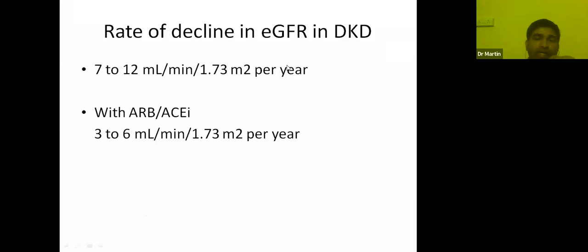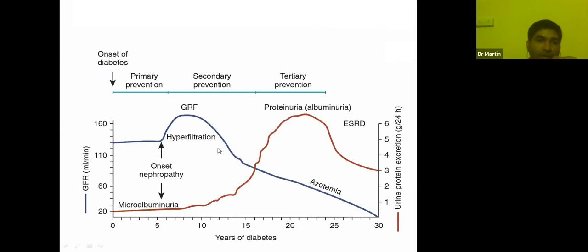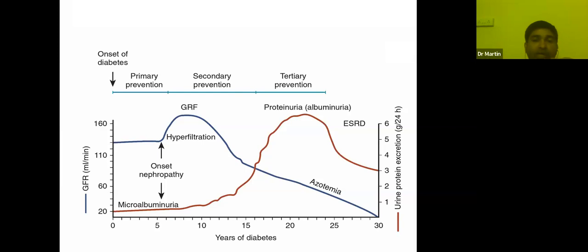The rate of GFR decline in diabetic kidney disease is about 7 to 12 ml per minute per year — a significant decline. Treatment with ACE inhibitors and ARBs can control the rate of decline, but ultimately the patient's creatinine will slowly rise toward azotemia and end-stage kidney disease. Once you diagnose a patient with diabetic kidney disease, you are accepting that this patient will end up in this pathway and all you can do is prevent rapid progression. That is why the diagnosis of non-diabetic kidney disease makes a critical difference.